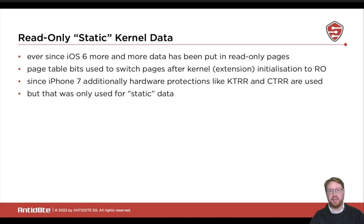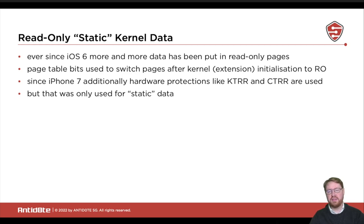Initially what they did is they used the low-level CPU page table bits to switch the pages read-only at runtime, basically after the kernel and kernel extensions had performed initialization. This allowed them to have real read-only data, and also stuff that is only written once at kernel start and can then remain read-only. Ever since the iPhone 7, Apple has more and more hardware security features built into their own CPUs, using new features like KTRR or CTRR to make this lockdown even tighter.